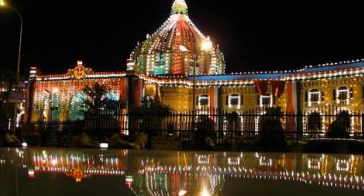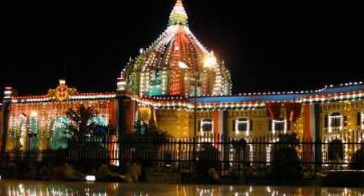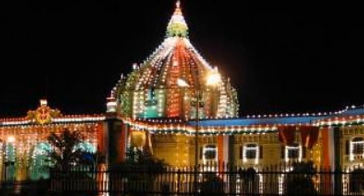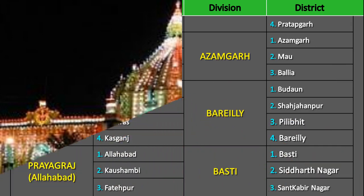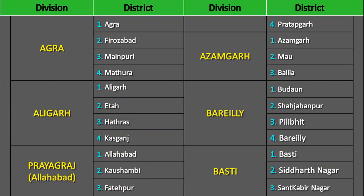There are 18 divisions in Uttar Pradesh. They are Agra, Aligarh, Prayagraj, Azamgarh, and Bareilly.